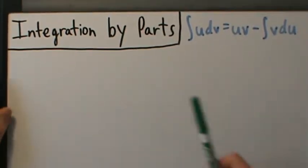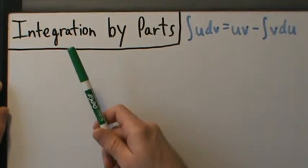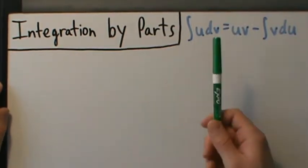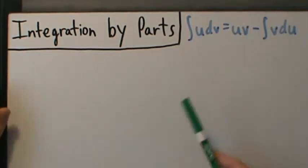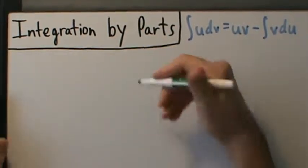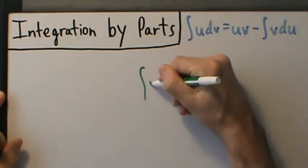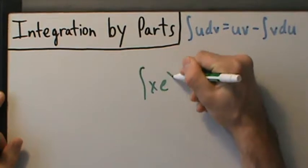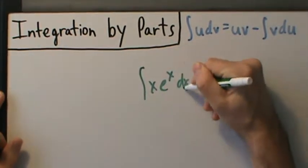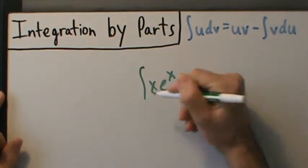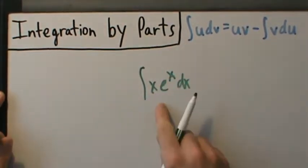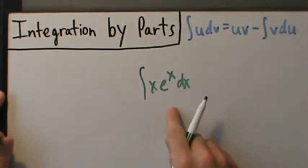Integration by parts is basically a formula that lets you integrate products of functions. So if you want to integrate something like x times e to the x dx, then integration by parts lets you do that.